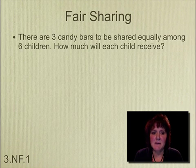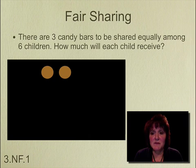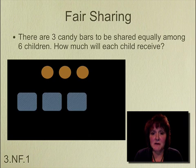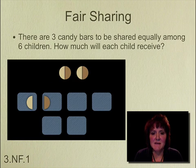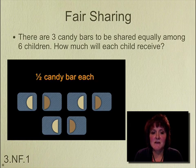The last example is there are three candy bars to be shared equally among six children. How much will each child receive? Each of the candy bars are cut in half and then passed out to each of the children. Each child receives a half of a candy bar.